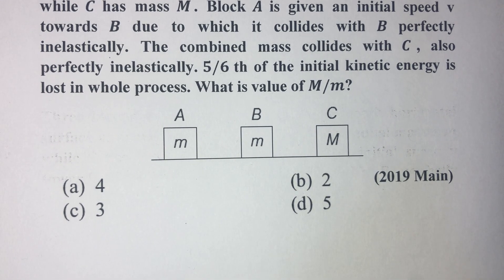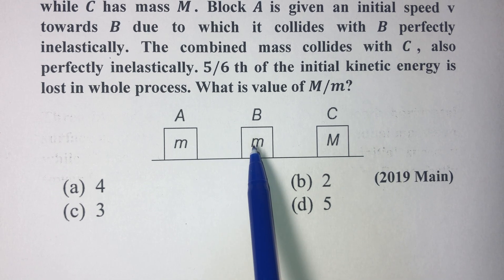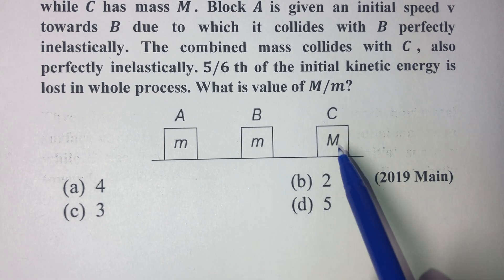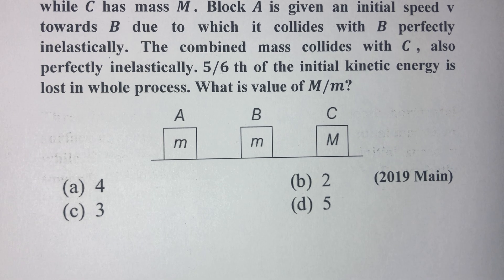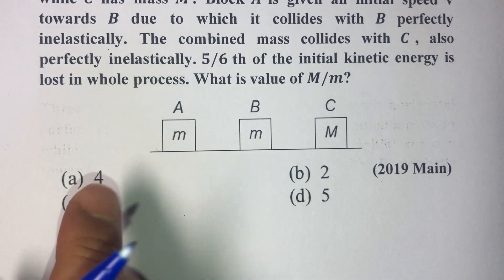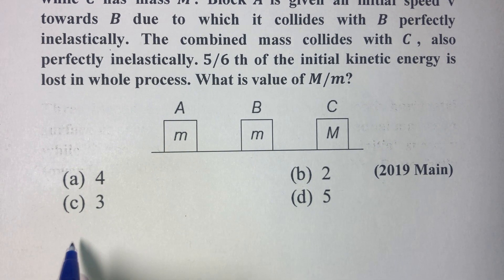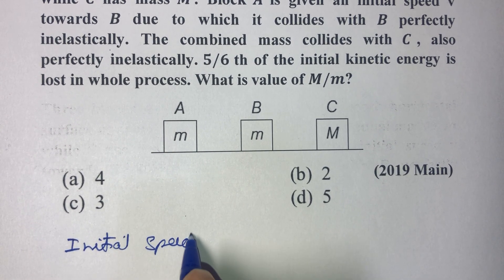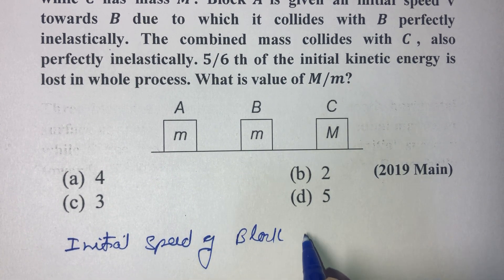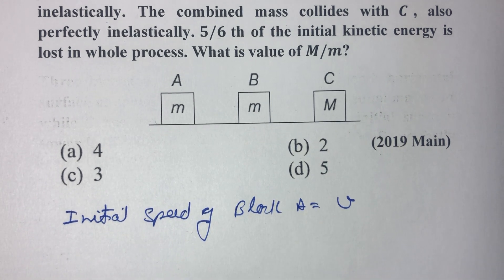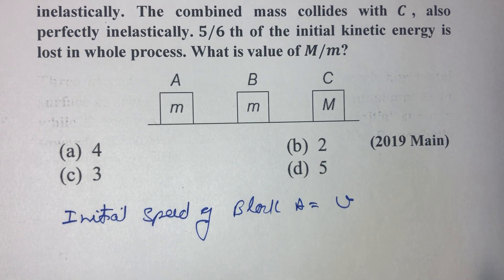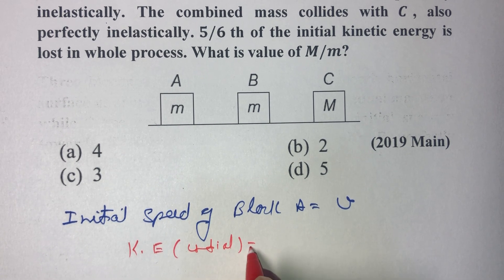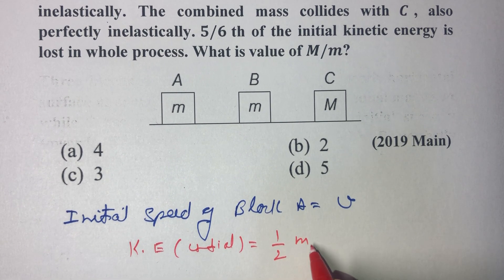We have three blocks A, B, and C. A and B collide first inelastically, then the combination of A and B also combines with C inelastically, and we have to find the ratio of capital M upon small m. The initial speed of block A is given as V, therefore the initial kinetic energy will be equal to half m V squared.